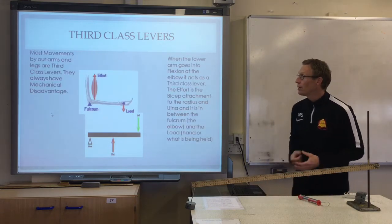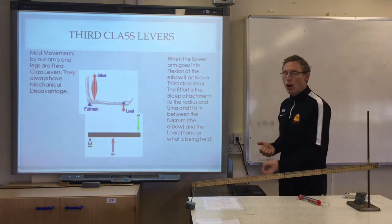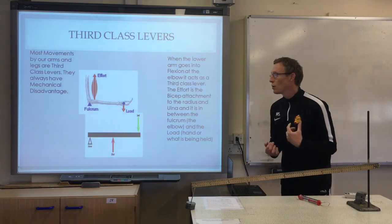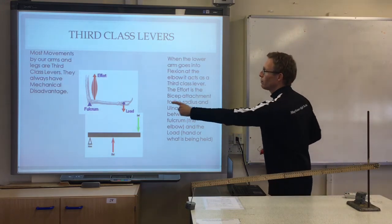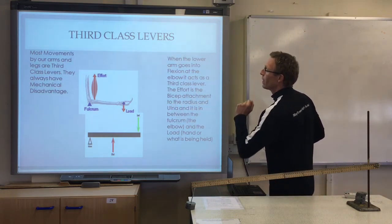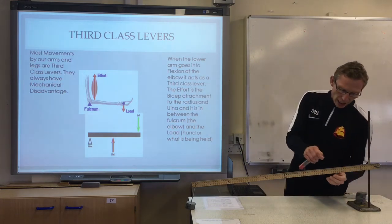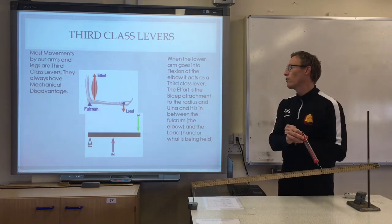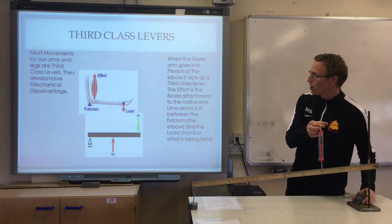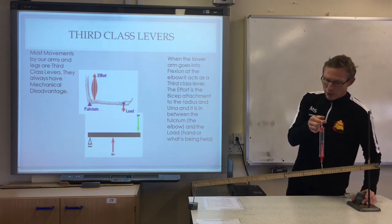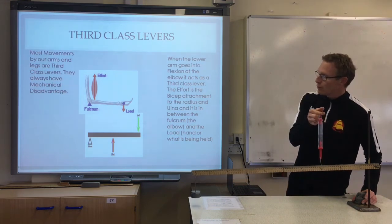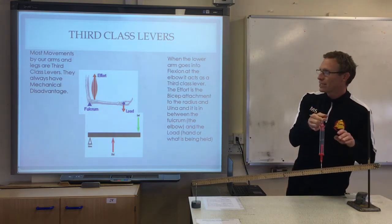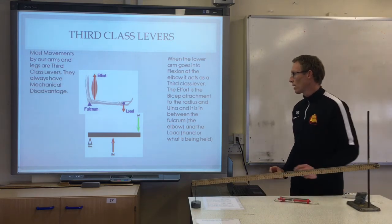In our body we have our elbow, and if we create flexion by contracting our bicep, that is a third class lever. The fulcrum is the elbow, which is the pivot point. The effort is the bicep which attaches just a little way along our lower arm, and we have the load at the far end — for example a dumbbell weight doing a bicep curl. The bicep contracts, lifting the lower arm and creating movement where the hand is joined to the dumbbell. That takes a lot more effort — it's a mechanical disadvantage.